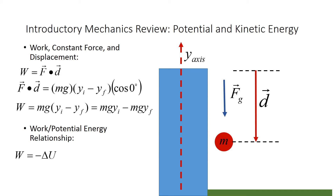Recall the work-potential energy relationship. Kinetic energy delta-K equals negative delta-U, and delta-K also equals work — that's the work-energy theorem, an introductory mechanics equation. We can define change in potential energy as U-final minus U-initial equals mgy-final minus mgy-initial. This is all review.